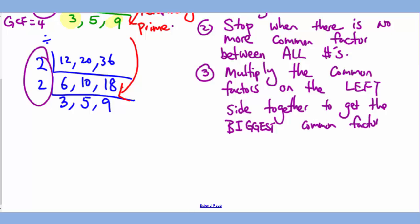Once again, the key to remember is that you're factoring out of all numbers. So you stop when there's no more common factor amongst all numbers.